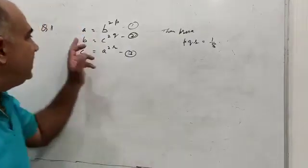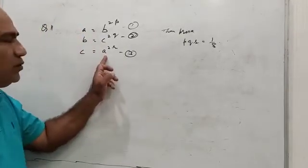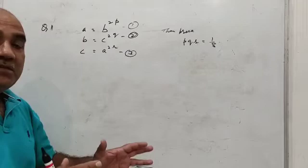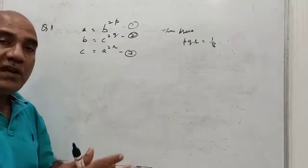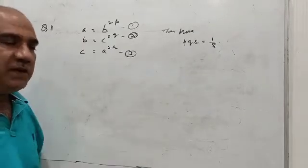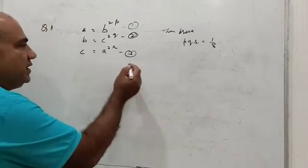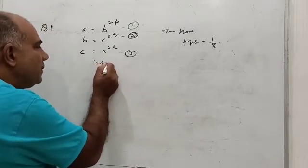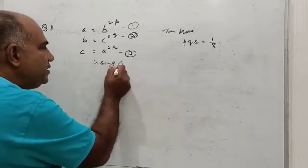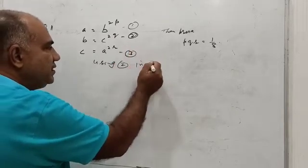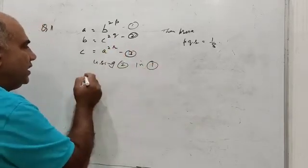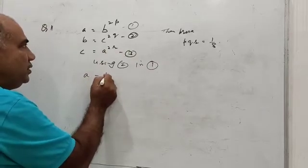see the left hand side has 'a' and right hand side also - I will make the right hand side contain only 'a', thereafter we will compare the powers. So let me write using equation 2 in equation 1. I can write a = b^(2p).